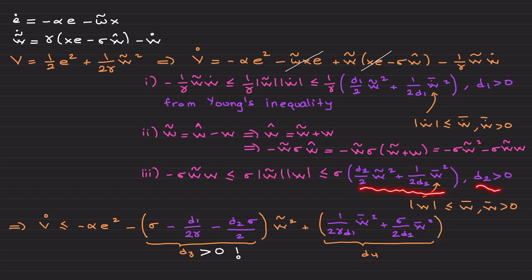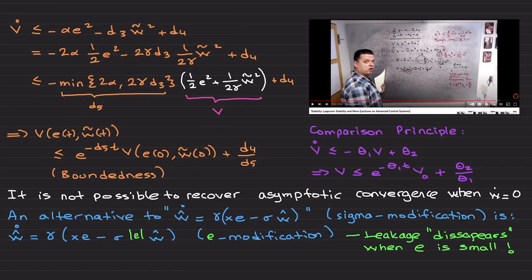Applying step one, two, three to this equation, you eventually arrive at this upper bound on V dot. Here I could group the terms depending on w tilde to the power of two and these constant terms. Therefore, for the stability analysis to hold, this term here needs to be positive, called d3. Since d1 and d2 are arbitrary constants from Young's inequality, it is always possible to choose them such that this is positive.